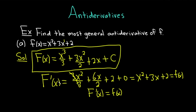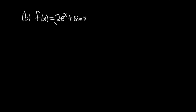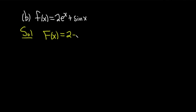Let's do another one. Part b: we have f of x equals 2 times e to the x plus the sine of x. So big F of x is going to be our antiderivative. The 2 is a constant so it hangs out, and then we antidifferentiate e to the x, which is just e to the x. Now we need to antidifferentiate sine — we have to think backwards: what's a function whose derivative is sine?